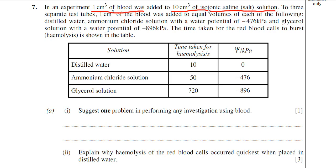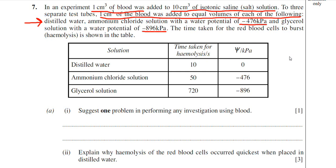Just to remind you, isotonic means that the water potential of the solution and the red blood cells are the same. Then to three separate tubes, one centimetre cubed of blood was added to equal volumes of distilled water, ammonium chloride solution with a water potential of minus 476 kilopascals, and glycerol solution with a water potential of minus 896 kilopascals. Water potential values are always negative unless you have pure water, which has a water potential of 0 kilopascals.